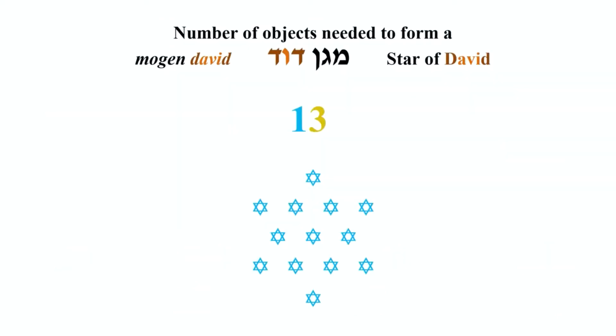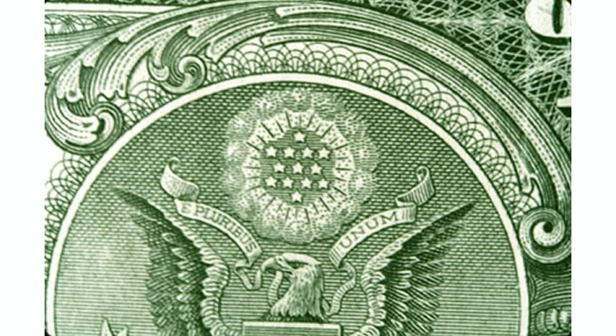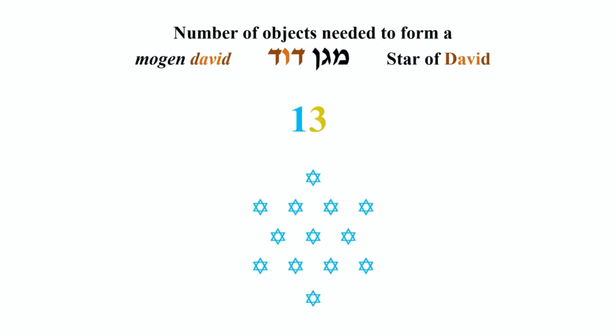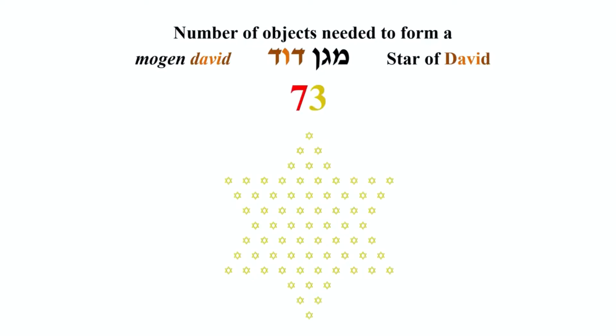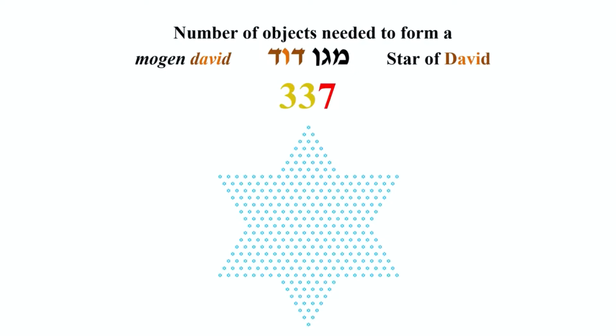If we look at the Mogen David — the Star of David — you might have seen this pattern before; it's on the back of an American $1 banknote. The most basic Star of David is 13 — it takes 13 points to form this geometrical shape. The next one would be 37. These 3s and 7s and 1s keep popping up in Star of David geometrical patterns. The next one is 73, and then for an even larger Star of David, 337.